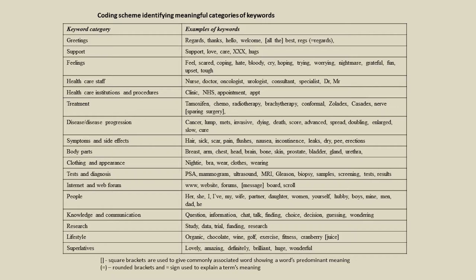These are the category systems I've invented to categorize keywords in this particular study. I've decided that body parts are things like breast, arm, chest, head, brain, bone, skin, prostate, bladder, gland, urethra. People words are 'her,' 'she,' 'my wife,' 'partner,' etc. It's a fairly simple thing to do. I've categorized words into groups — I could have categorized them into verbs and pronouns, there are all sorts of different category systems depending on your research project. This was a very simple project simply going to look for gender differences.